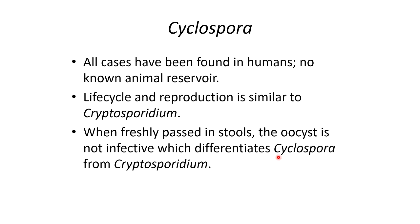Moving on to the last parasite of today: Cyclospora. All Cyclospora cases have only been found in humans — there is no known animal reservoir, so it only infects humans. The life cycle and reproduction are very similar to Cryptosporidium. However, what differentiates Cyclospora from Cryptosporidium is that when the oocyst is freshly passed in stool, Cyclospora oocysts are not infective — they're not sporulated — so they're not immediately infective. It does take a few days for them to become sporulated and infectious.